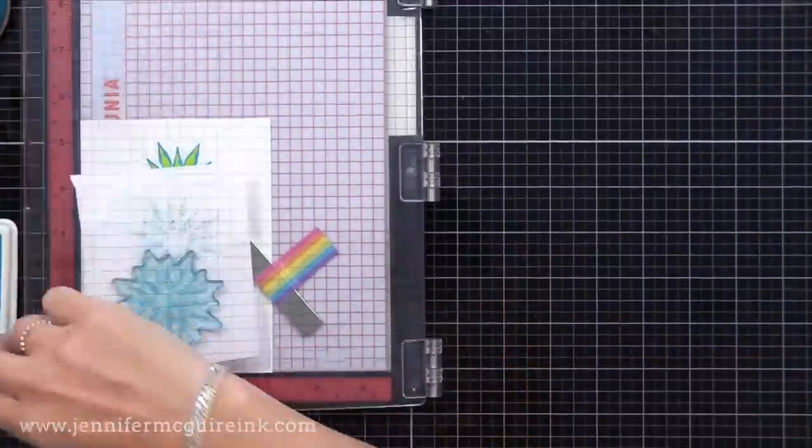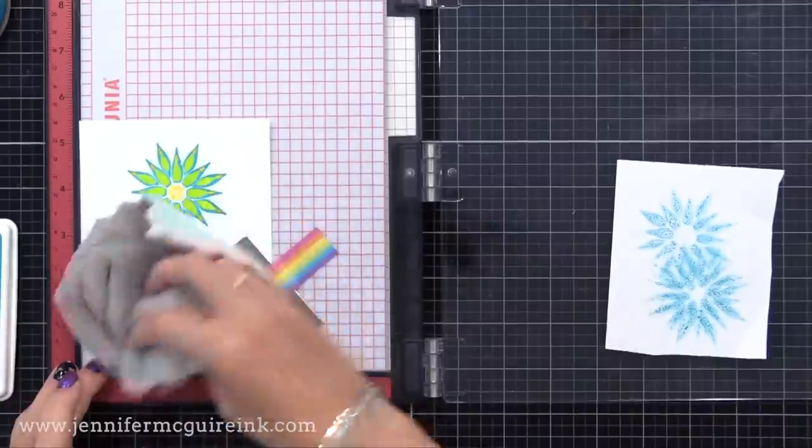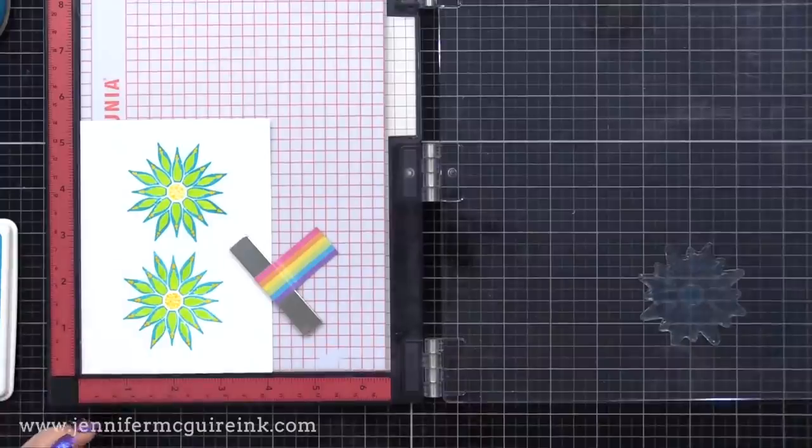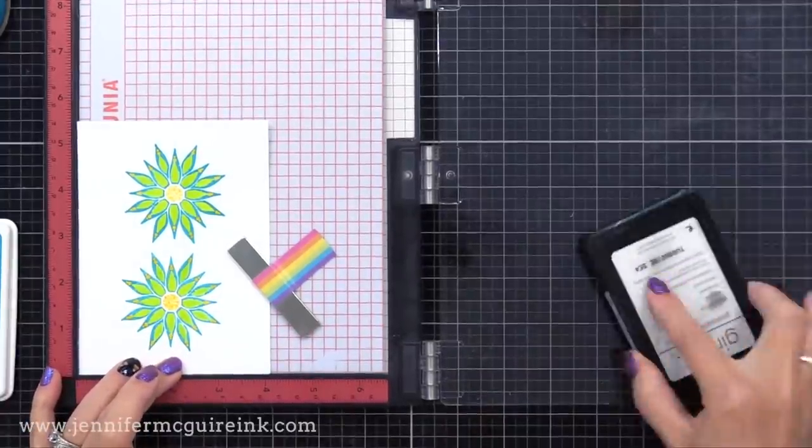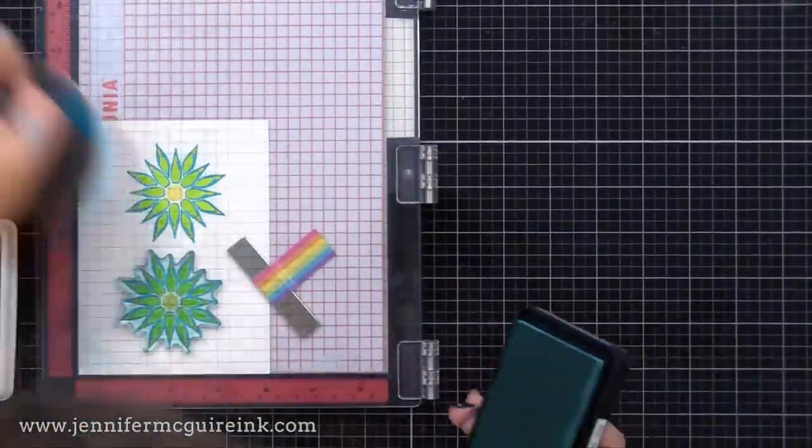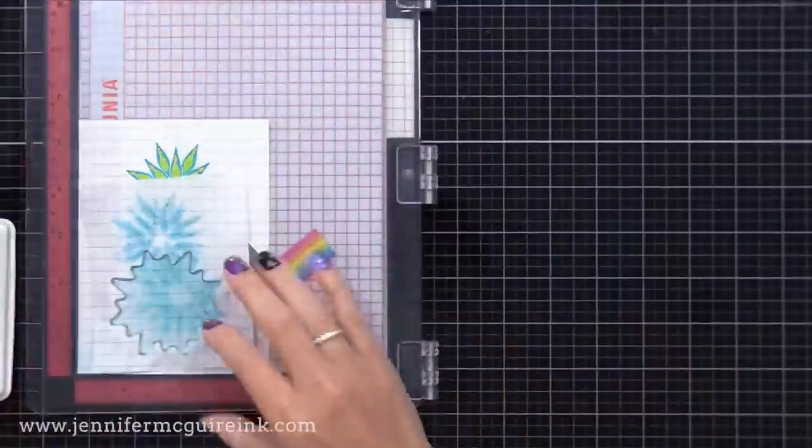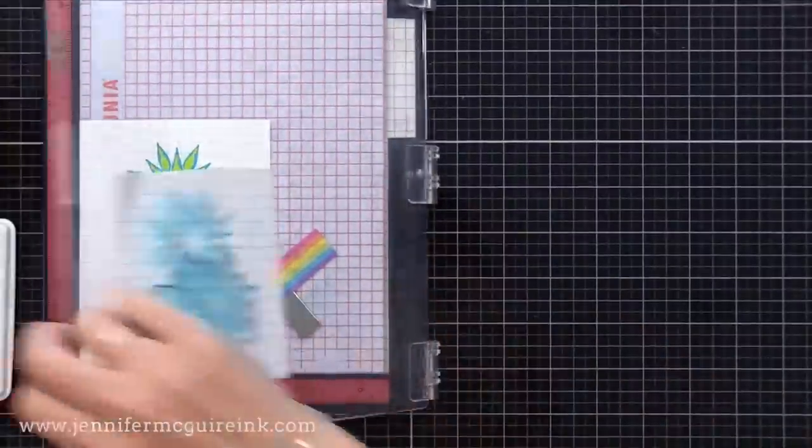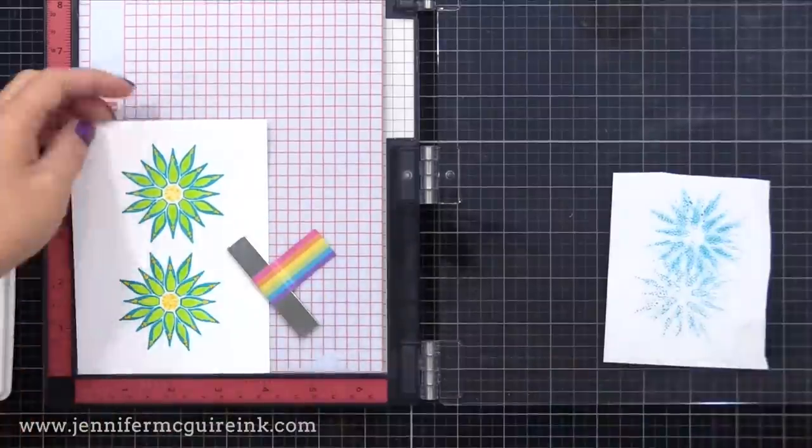When I do this step, it removes some of that excess ink off of the heat embossing. Then I can use a cloth to wipe away any more. Notice that that green and yellow stays bright with the blue around it. If we had not done clear embossing over the green and yellow, all of this would have layered together, and you wouldn't have seen the bright green and yellow. This is a great way to do masking when you're using layered images.